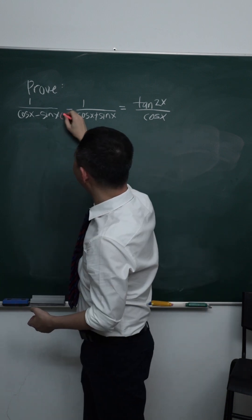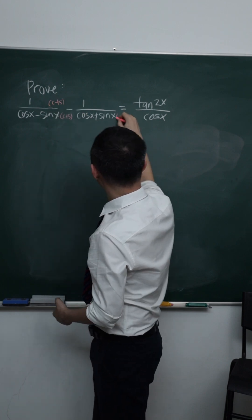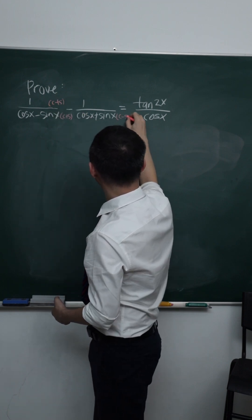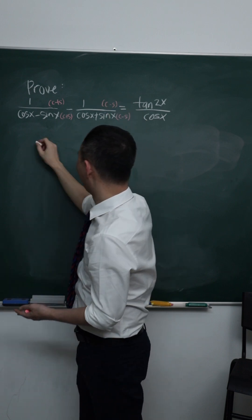So I multiply cos plus sin, cos plus sin. And here I multiply cos minus sin, cos minus sin. Okay, you should get it. It's not that hard.